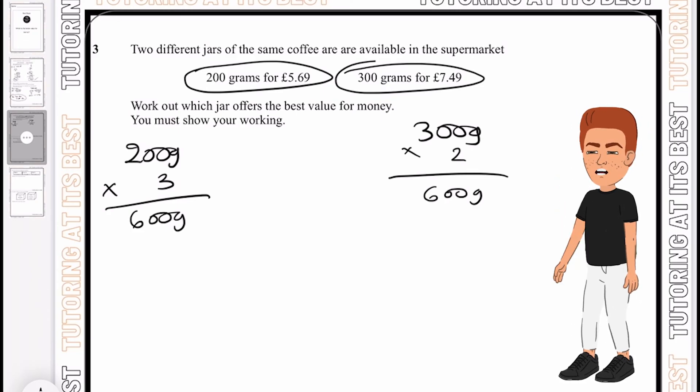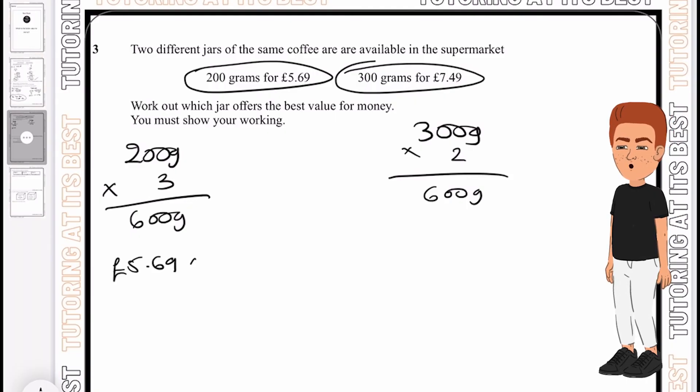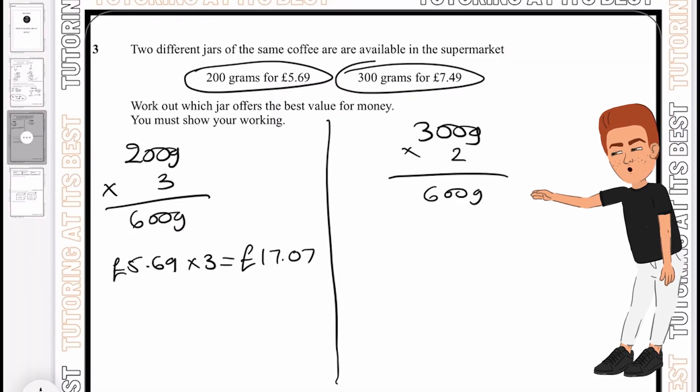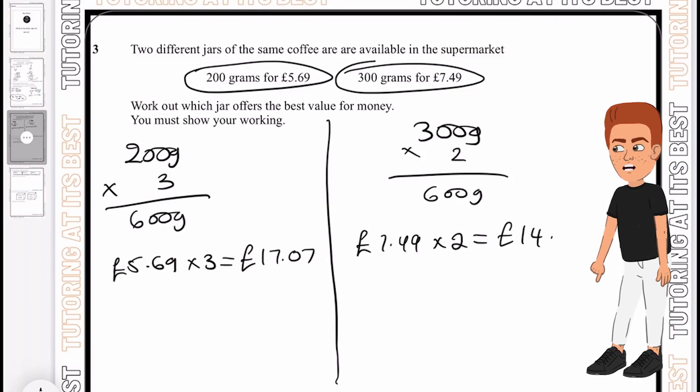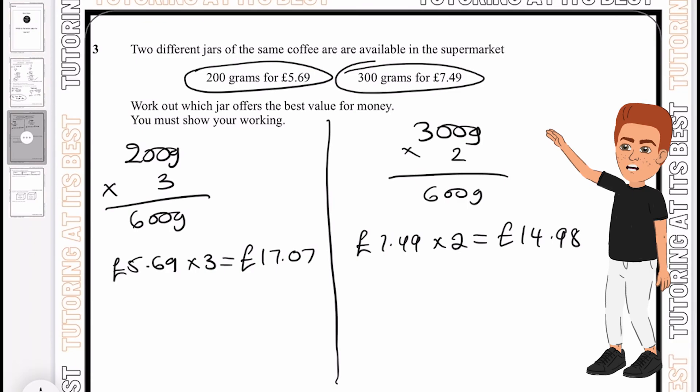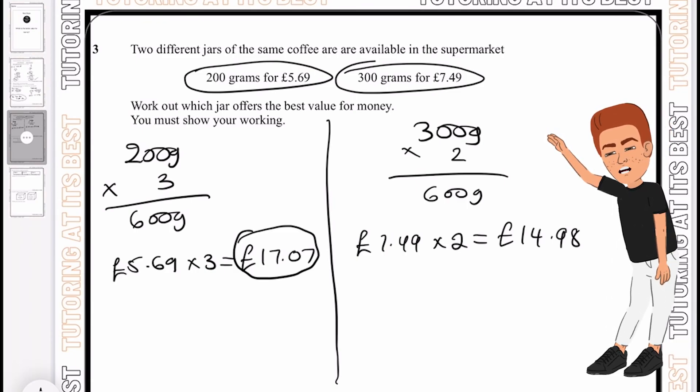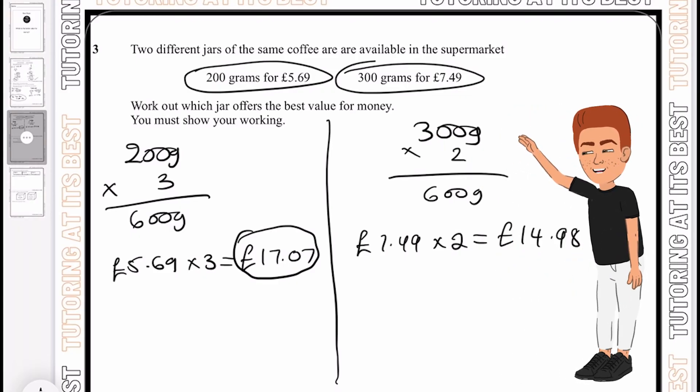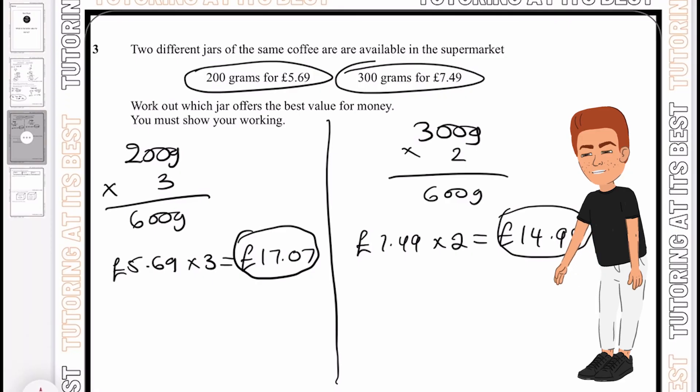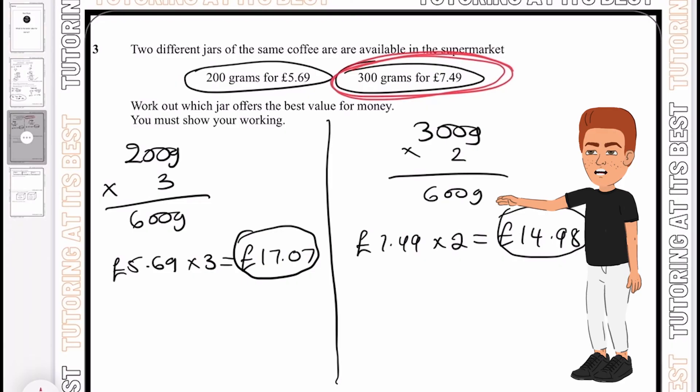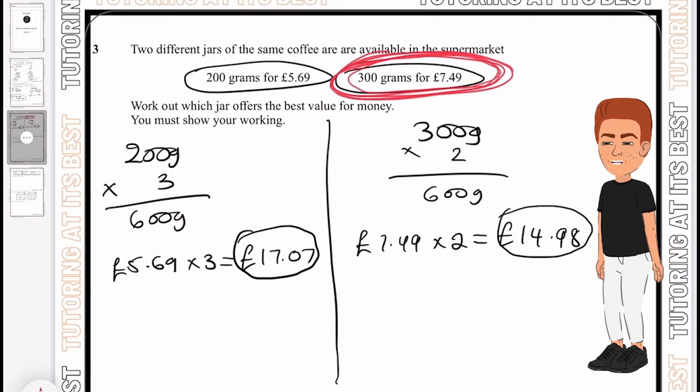I need to do the same to the value. I'll take £5.69 and times this by 3, which gives me £17.07. I'll take £7.49 and times this by 2, which gives me £14.98. If I get 600 grams on the left hand side, it will cost £17.07. But if I take 600 grams on the right hand side, it costs £14.98. Therefore, the 300 grams for £7.49 is better value.